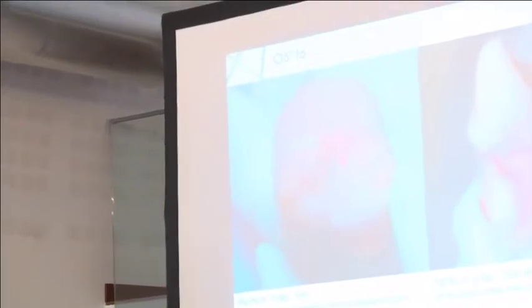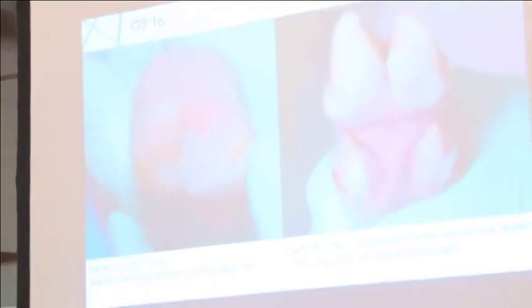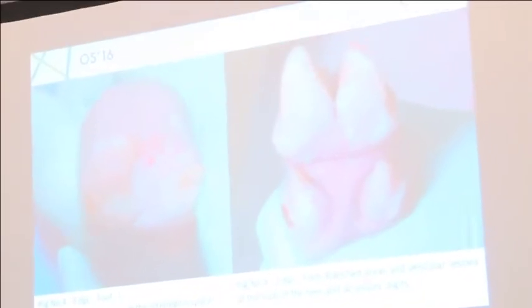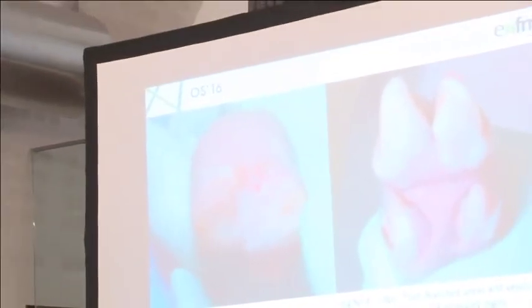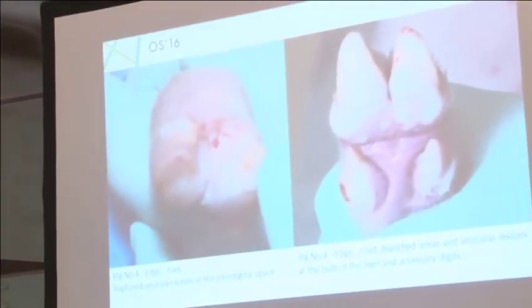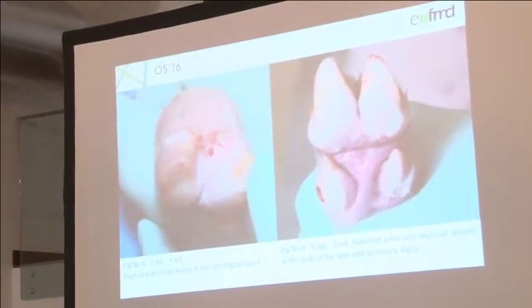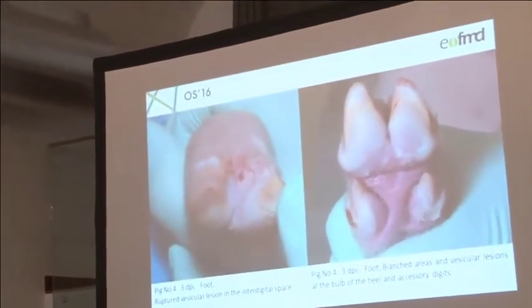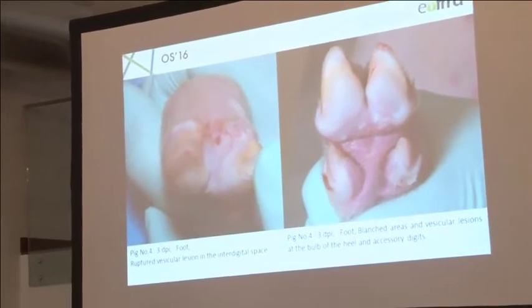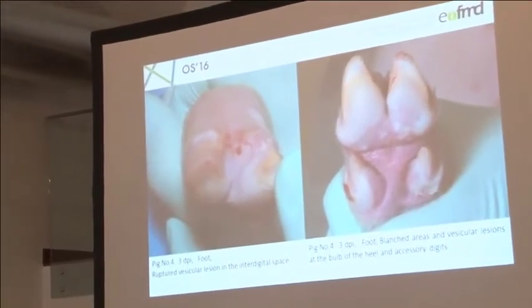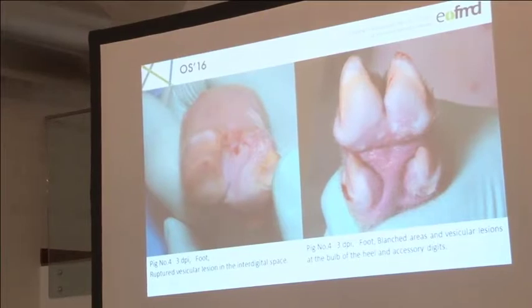Clinically, vesicular lesions were observed in one of three pigs at one day post-inoculation, and in all three pigs at three days post-inoculation. This slide shows the gross lesions in pigs inoculated with O JPN-2010 on three DPI. Ruptured vesicular lesions are seen in the interdental space, and branched areas. Vesicular lesions are also seen on the coronary band and accessory digits. Inoculated pigs showed normal body temperature; however, heat was detected in all pigs on handling.